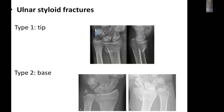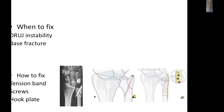For ulnar styloid fractures, only proceed to fixation if there is a large basal fragment and instability persists after distal radius fixation. Fixation options include tension band wiring, screws, or a hook plate.